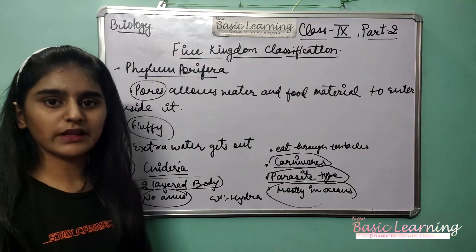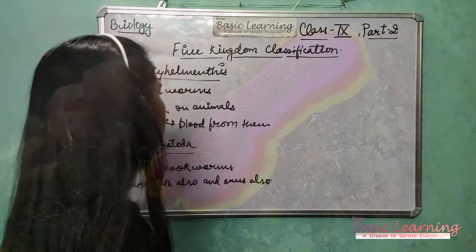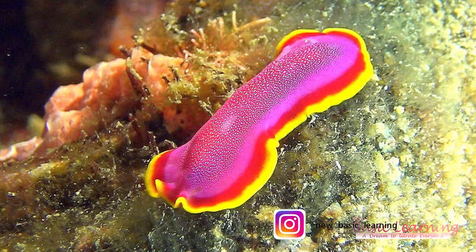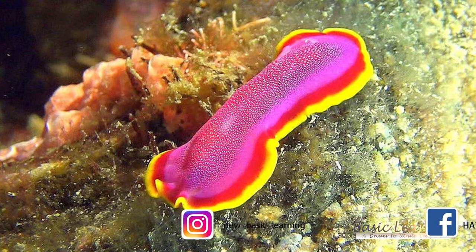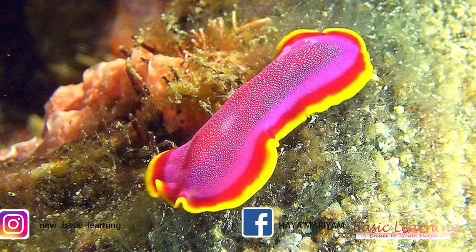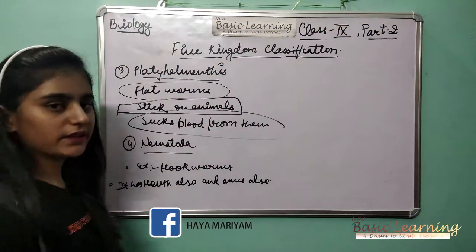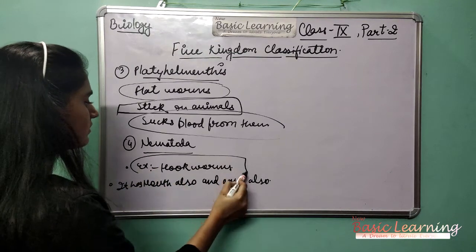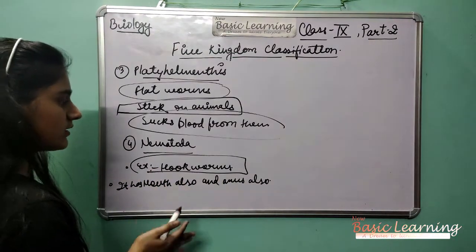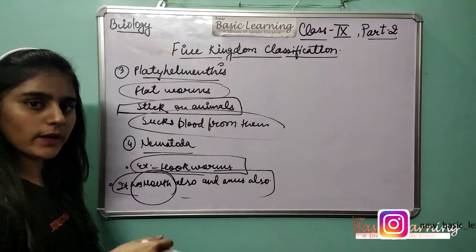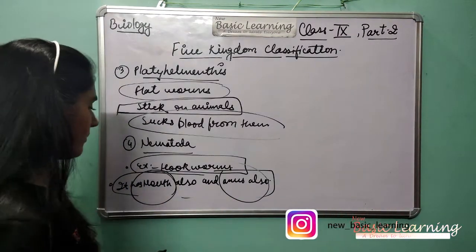The third phylum is Platyhelminthes. Flatworms come under this category. It has both a mouth and an anus — both an eating part and a digestive ending part.